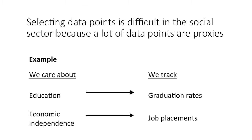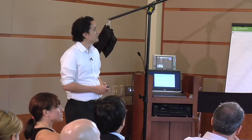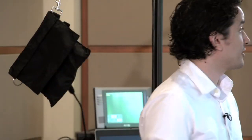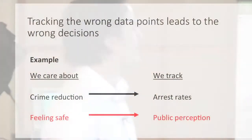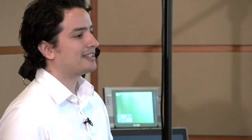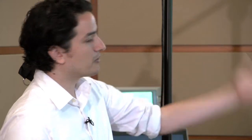Or maybe we care about economic independence and then we're tracking job placements. Again, this isn't necessarily exactly the same thing. Tracking the wrong data points can lead to the wrong decisions. Here's an example of an organization that invests in community development corporations that I worked with — one of the things they cared about was crime reduction, and the way they were deciding where to invest in anti-crime programs was in areas that had high arrest rates.